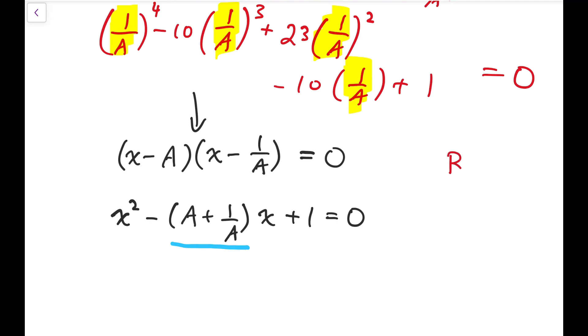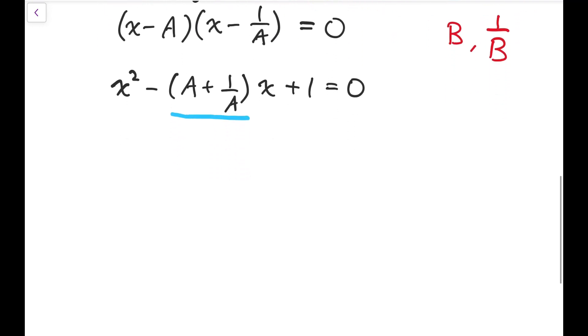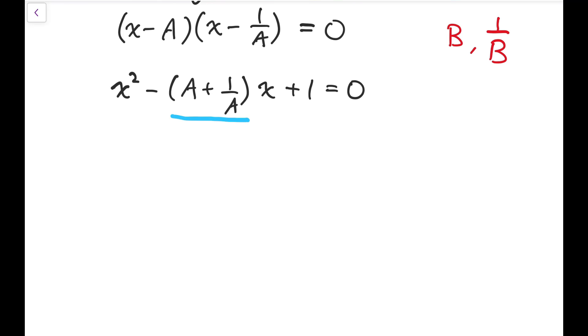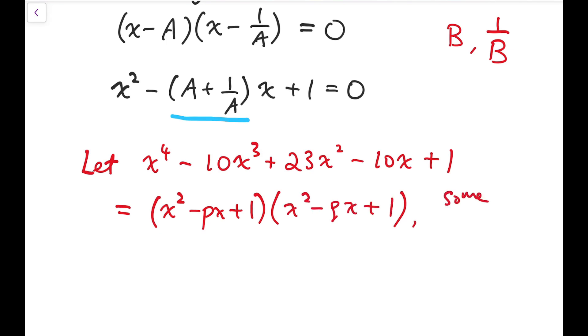This applies to the other pair, b and 1 over b as well. So that means I can factorize the quartic into the product of two quadratics of this form. So I can say that our original polynomial is equal to the product of two quadratics, x squared minus px plus 1, x squared minus qx plus 1, for some real numbers p and q.